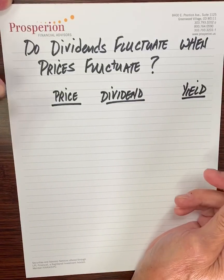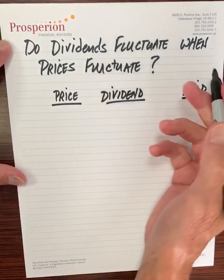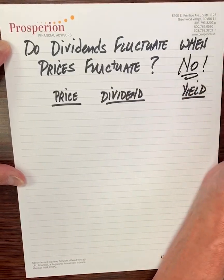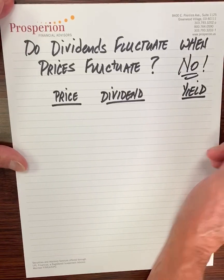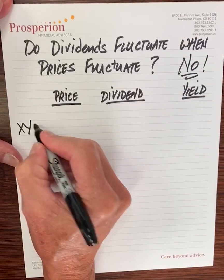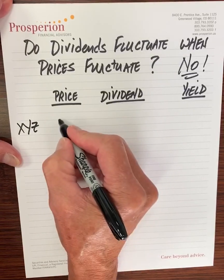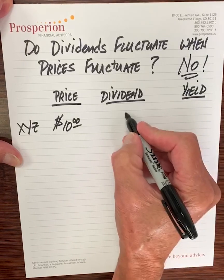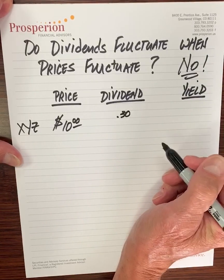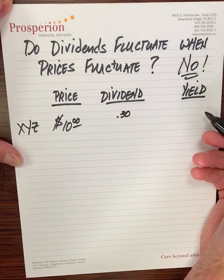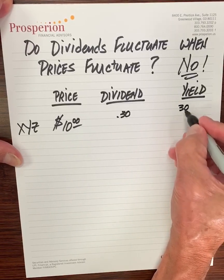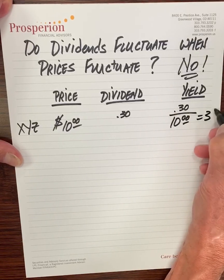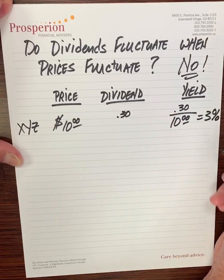Recently, we've had a few clients who've asked the question: do dividends fluctuate when prices fluctuate? And the answer is no. I'm going to illustrate what I mean by that. Let's assume that we make an investment in XYZ Corporation and we buy XYZ Corporation for $10 per share. This company pays us a dividend of $0.30 per share. When we calculate the yield, it is simply the dividend rate divided by the price per share — in that example, a 3% dividend yield.